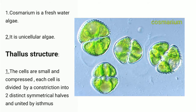Thallus structure of Cosmarium. The cells are small and they are compressed. Each cell is divided by a constriction into two distinct symmetrical halves and united by a small isthmus. The isthmus is a narrow path connecting two structures.